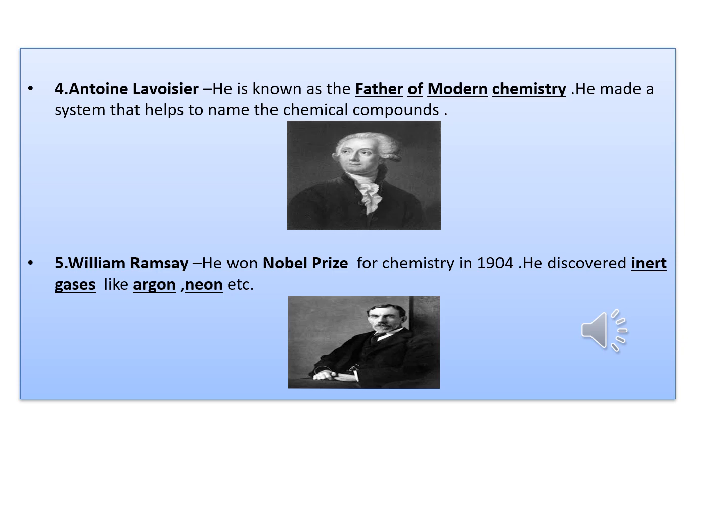For example, NaCl stands for sodium chloride, and KCl means potassium chloride. The fifth chemist is William Ramsay, who won the Nobel Prize for Chemistry in 1904. He discovered inert gases like argon and neon. Inert gases are highly stable and unreactive in nature, but still have certain uses. For example, argon gas is used for cutting and welding purposes and also for filling electric bulbs. Neon gas is used in lighting signs, often called neon signs.